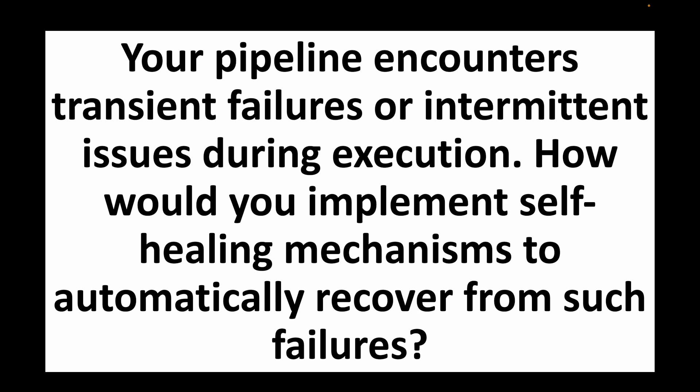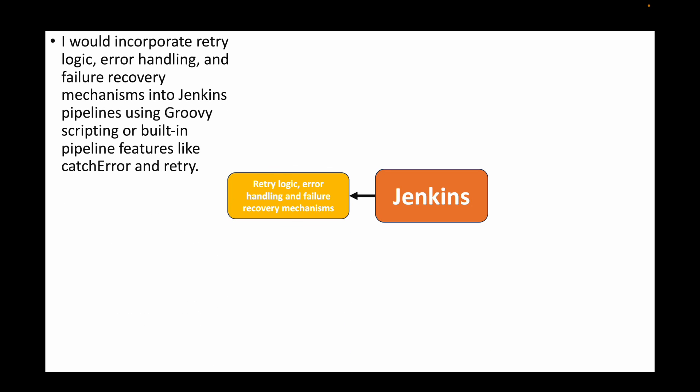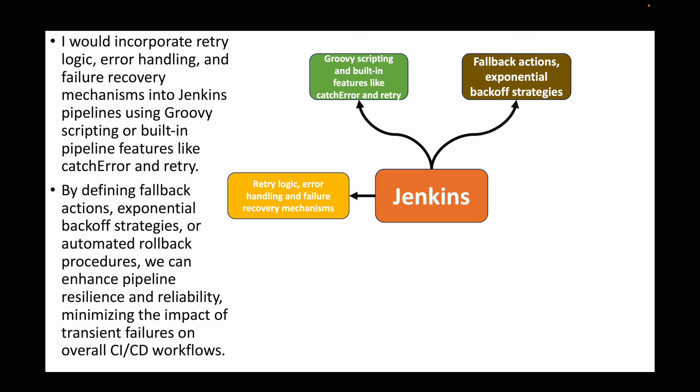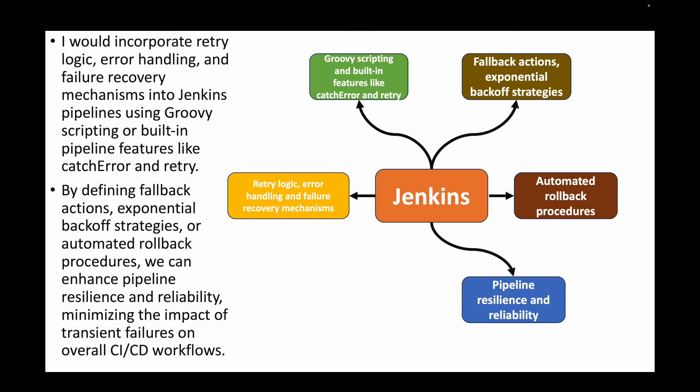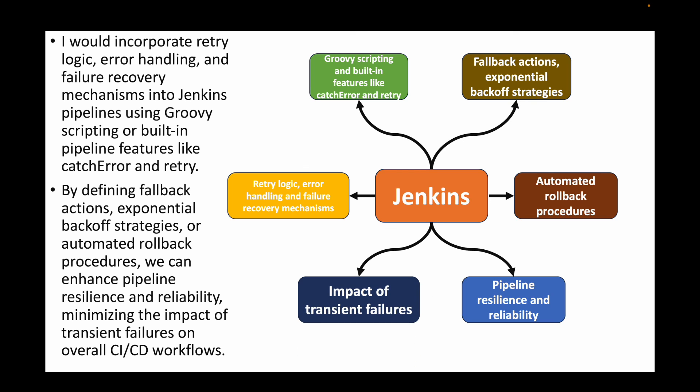The final question: your pipeline encounters transient failures or intermittent issues during execution — how would you implement self-healing mechanisms to automatically recover from such failures? Use retry logic, error handling, and failure recovery mechanisms within Jenkins pipelines via Groovy scripting or built-in features like catchError and retry. Define fallback actions, exponential back-off strategies, or automated rollback procedures to enhance pipeline resilience and reliability, minimizing the impact of transient failures on the overall CI/CD workflow.